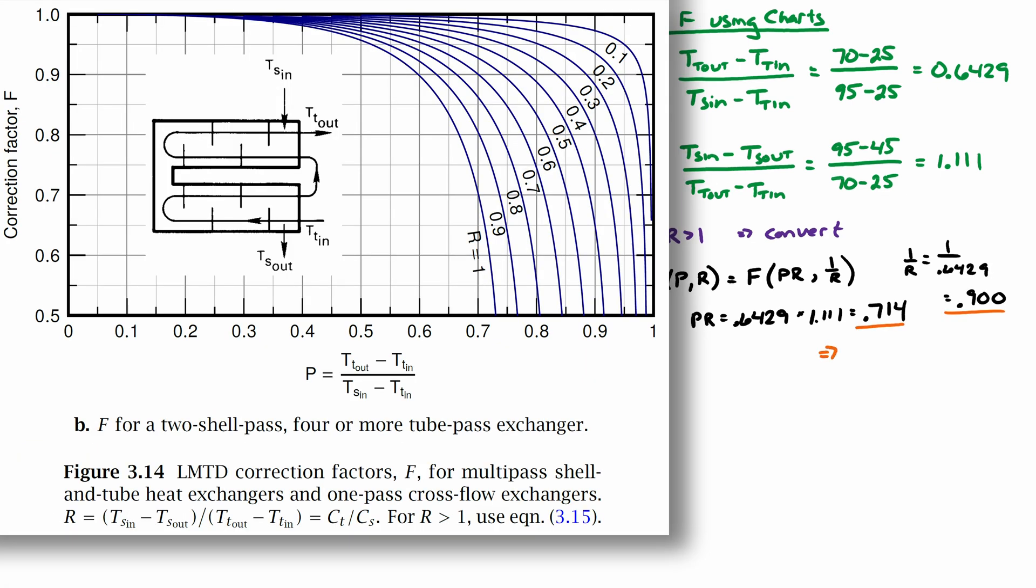So now I'm looking up in my figure at a P value of 0.714 at an R value of 0.90. And that gives me a correction factor F of 0.78.